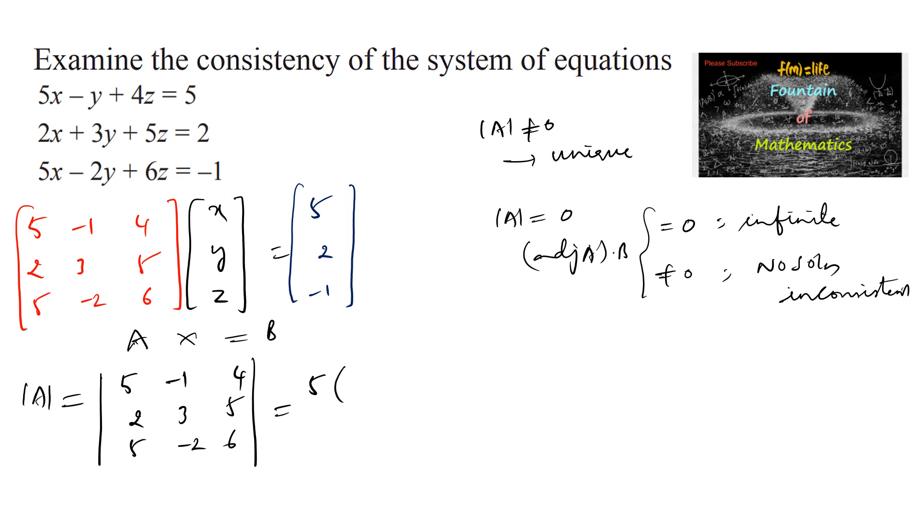Which is equal to 5 times (18 minus -10, that is 28), plus 1 times (12 minus 25, that's -13), and plus 4 times (-4 minus -15, that is -19). So 28 times 5 is 140, and -13, and here we can read 40 plus 36 is 76, so 140 - 13 - 76.